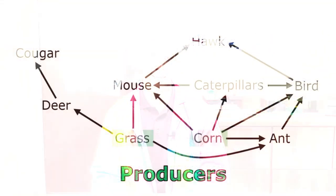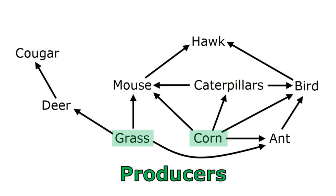So let's take a look at what types of organisms are represented in this food web to determine what type of organism might be missing. You can see that we have producers, which are plants — the grass and the corn.